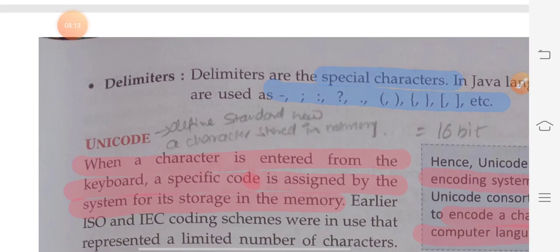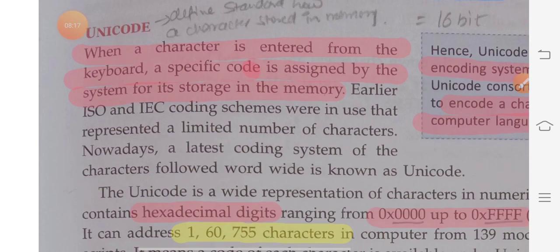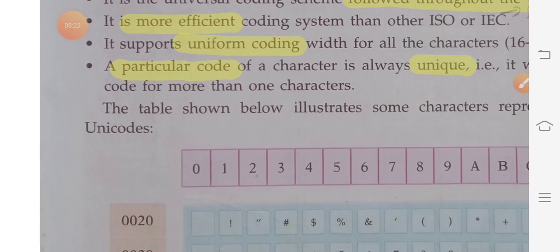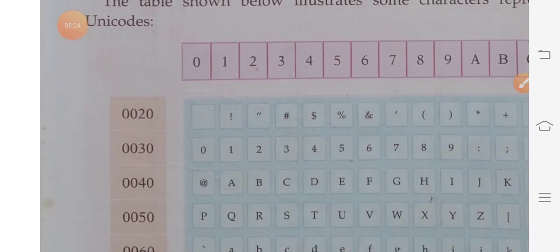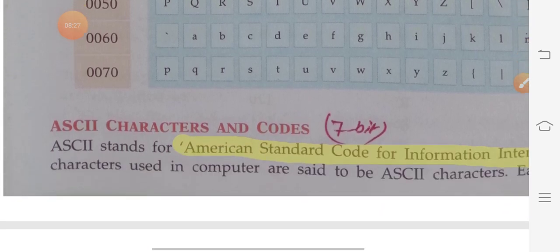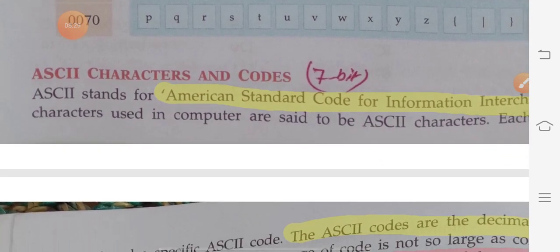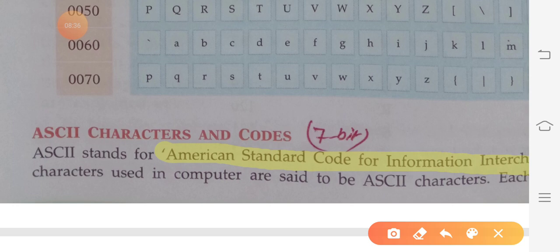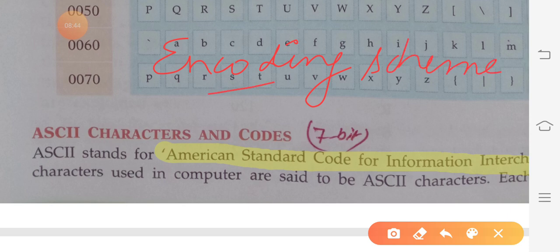After delimiters, the next topic is Unicode. But before Unicode, we will first discuss ASCII code, then come back to Unicode. We have two types of encoding scheme in Java. You should first understand what encoding schemes are.